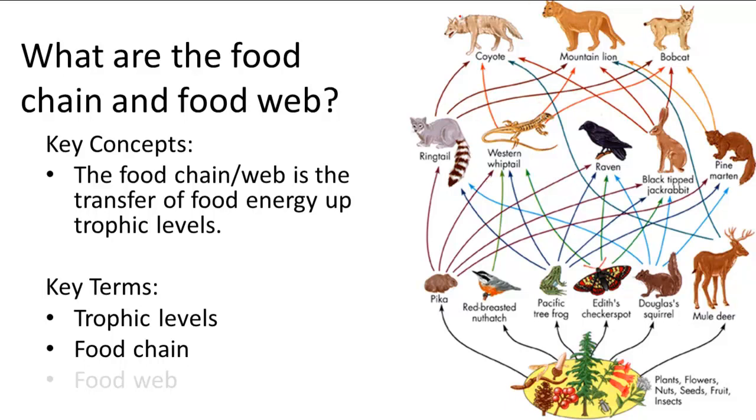And what I was talking about before, how different consumers don't have to stay in their trophic level, is represented right here. So the mule deer is a primary consumer, but it can also be eaten by the coyote, which is a tertiary consumer.